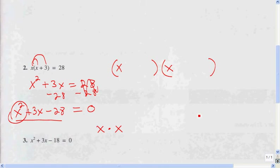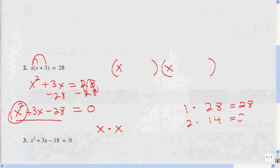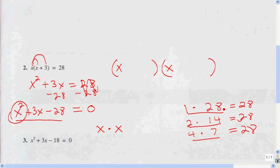Now I'm going to factor 28. There are a few factors of 28. The first, most obvious one is 1 times 28 equals 28. 2 times 14 equals 28. And 4 times 7 equals 28. All of these are factors of 28. Now what I've got to ask myself is which one of these, when I add or subtract them, gives me the middle term, which is 3.